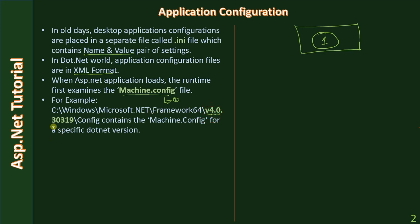Then we will have a specific framework version. In this example, we are at .NET version 4. Inside that, you will have a folder called config. This folder contains the machine.config file for that specific .NET version. All settings are first searched in this machine.config file.